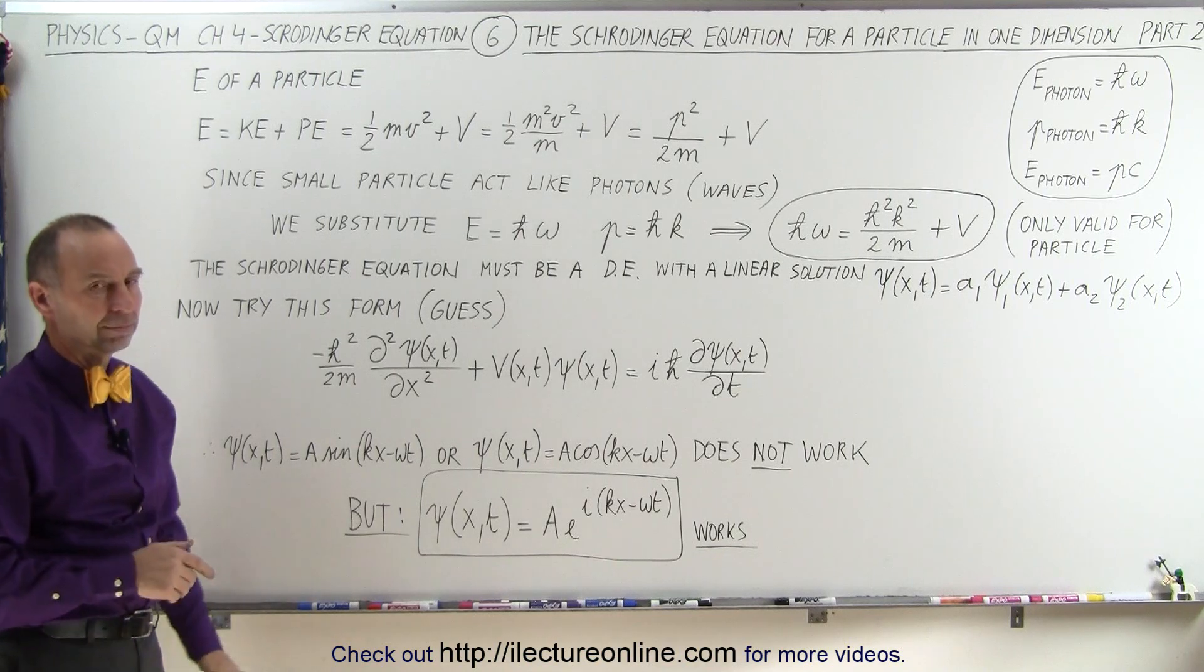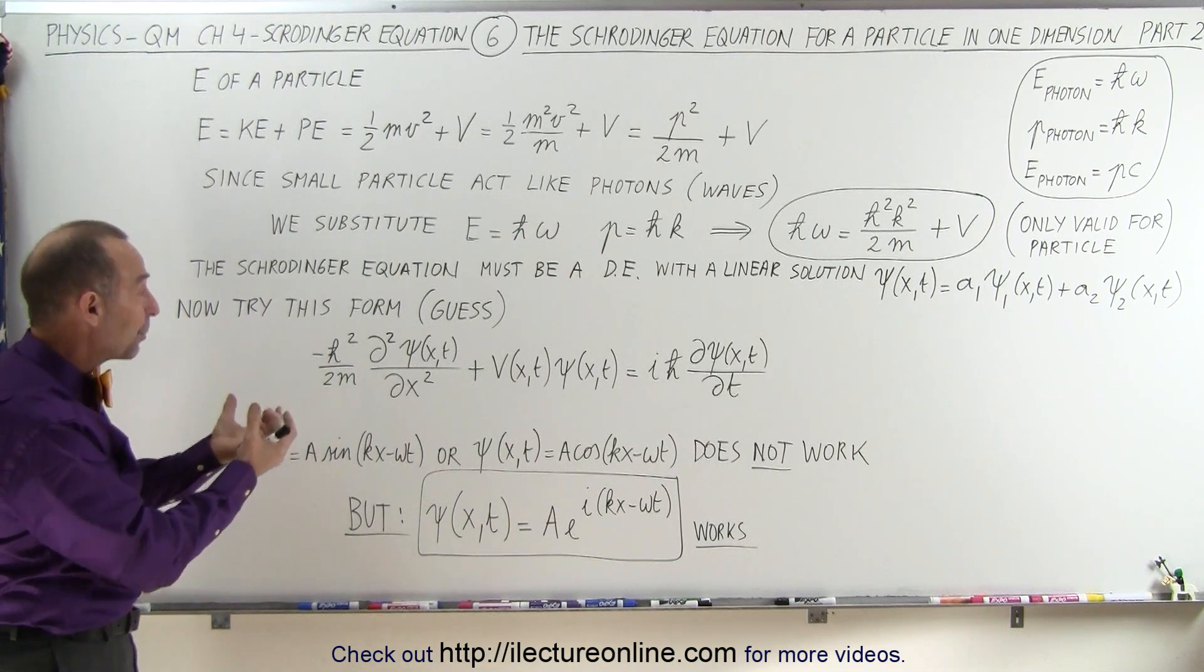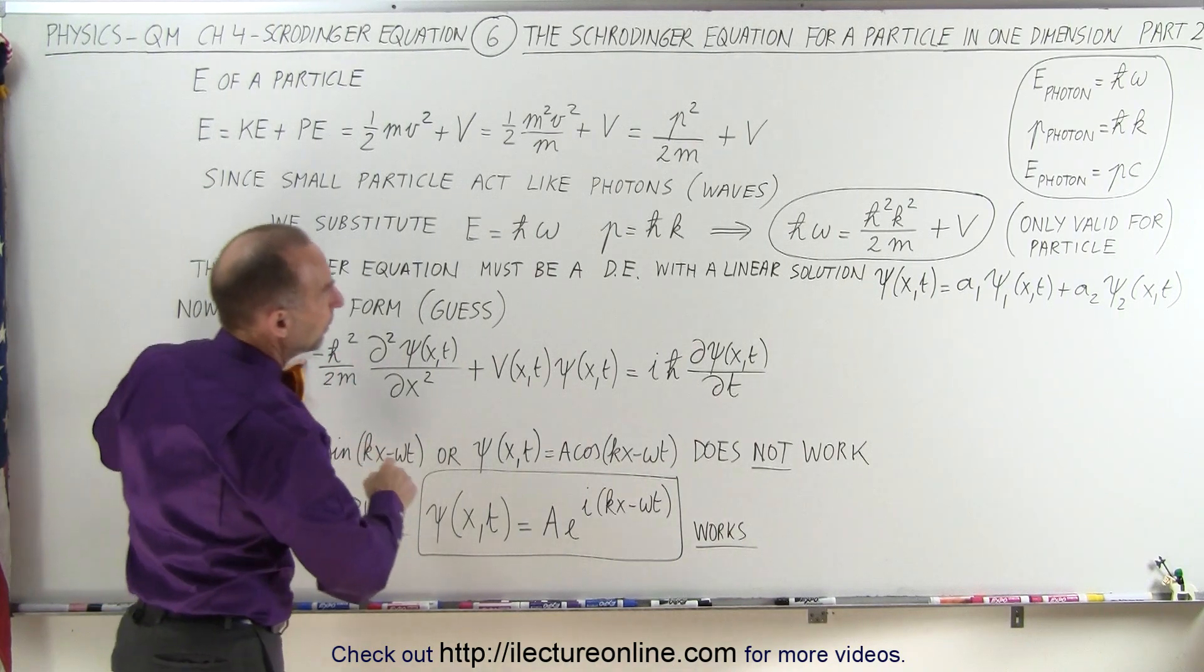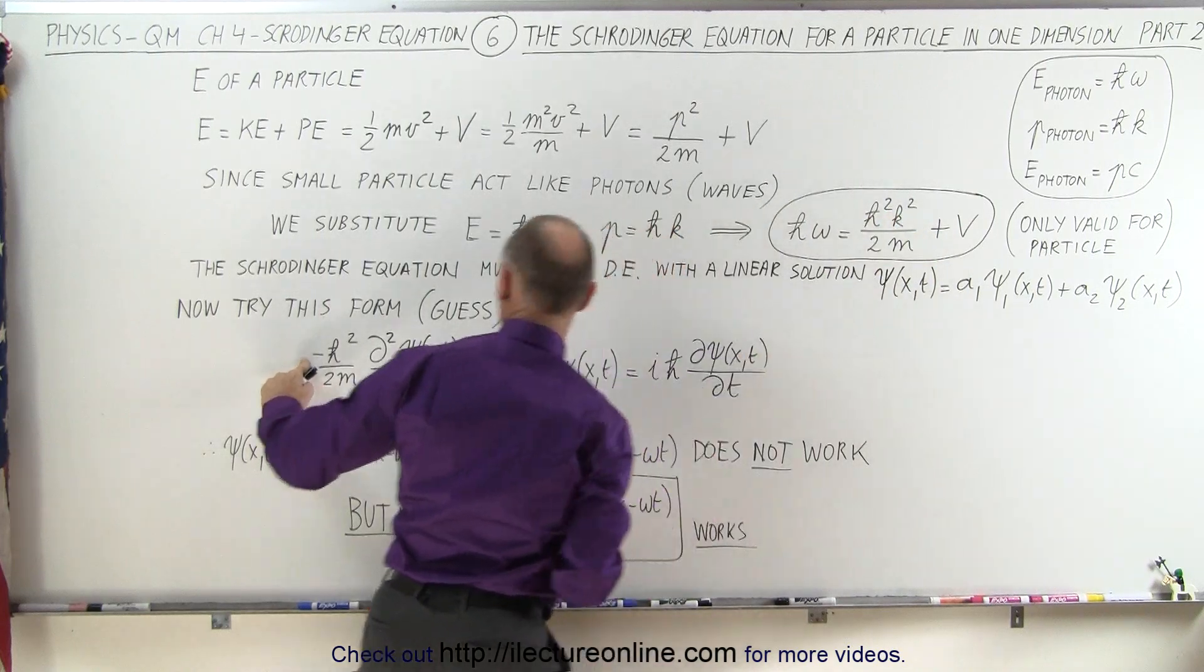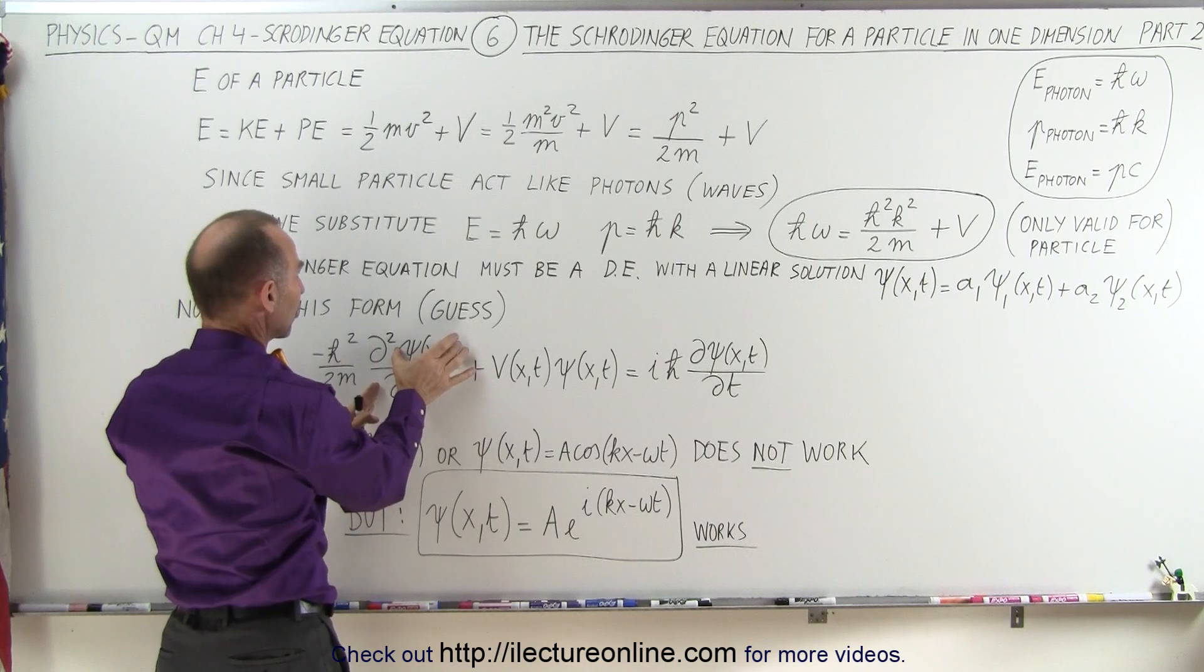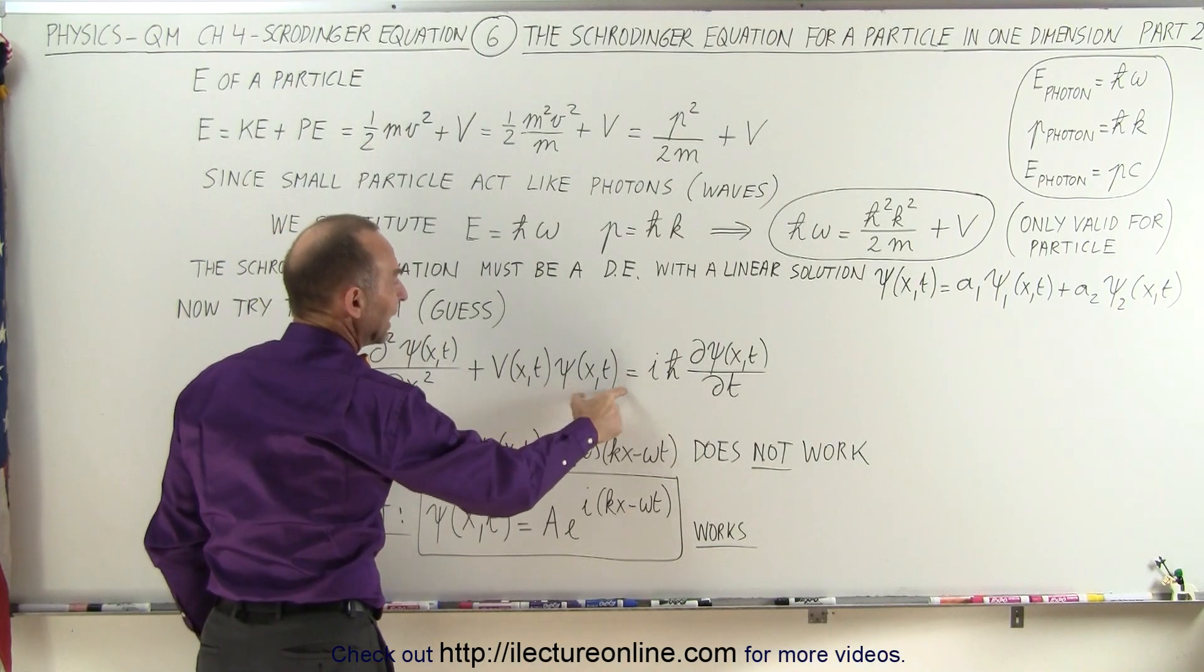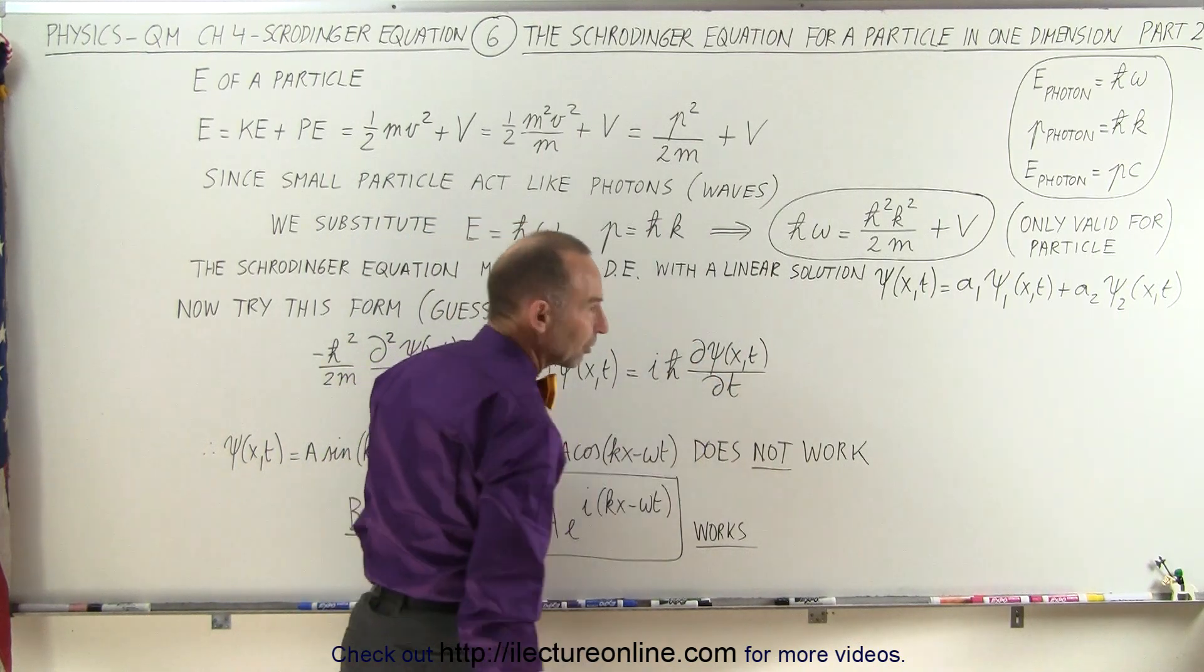But eventually, they came up with this concept. Let's say that this is what the Schrödinger equation looks like: minus h-bar² divided by 2m, which is very similar to this, except they took away the k², put a negative in front of that, times the second partial derivative of the Schrödinger equation with respect to position, plus the potential energy of the particle times the Schrödinger equation equals i h-bar times the first partial derivative of the function.